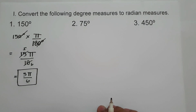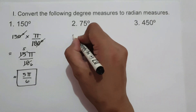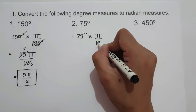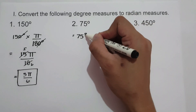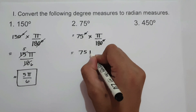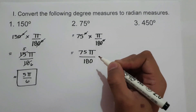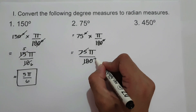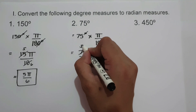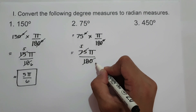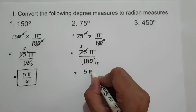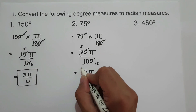On number 2, we have 75 degrees. So we have 75 degrees times pi over 180 degrees. Cancel the degree sign, giving us 75 pi over 180. Since 75 and 180 are divisible by 15, 75 becomes 5 and 180 becomes 12. So the answer is 5 pi over 12.